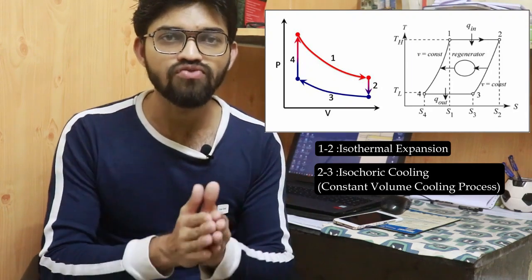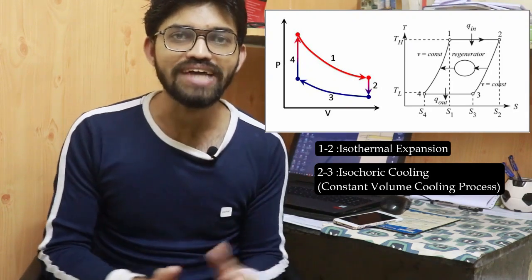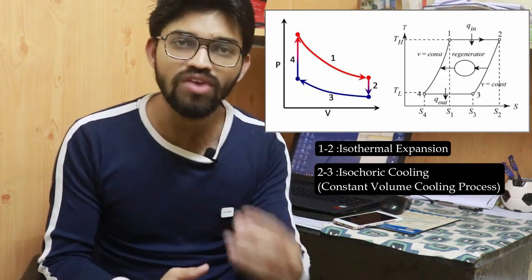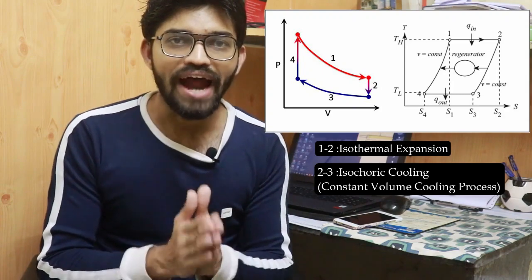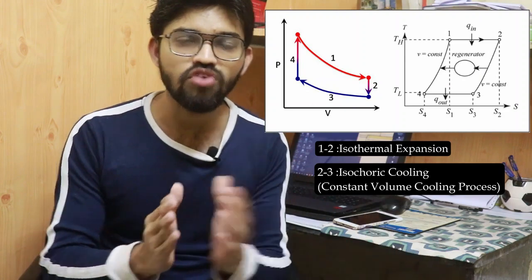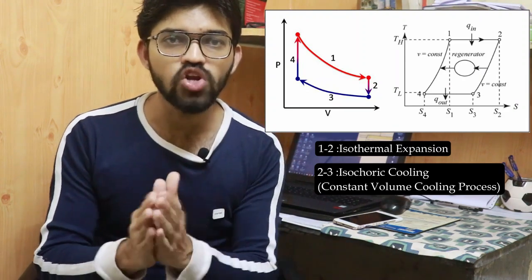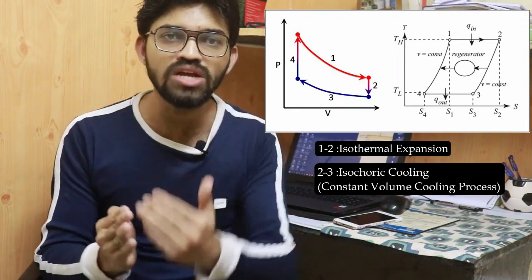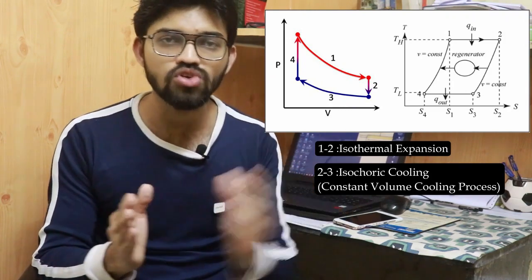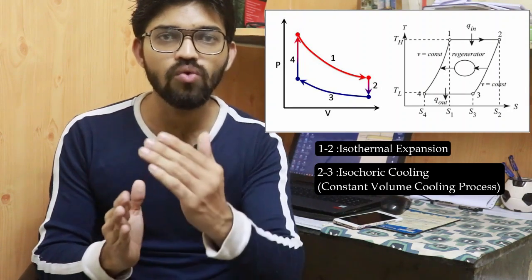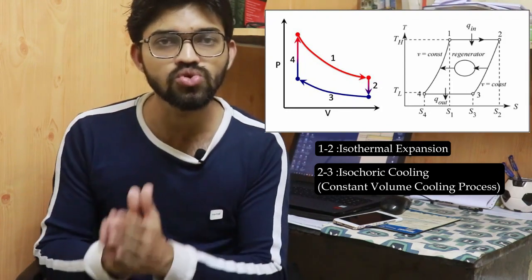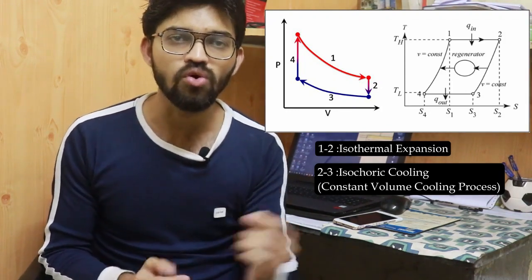The second stage, process two to three, is isochoric cooling — cooling at constant volume. In the engine cylinder, the volume remains constant but when the piston moves far from the heat source, cooling takes place. This is the constant volume cooling process.